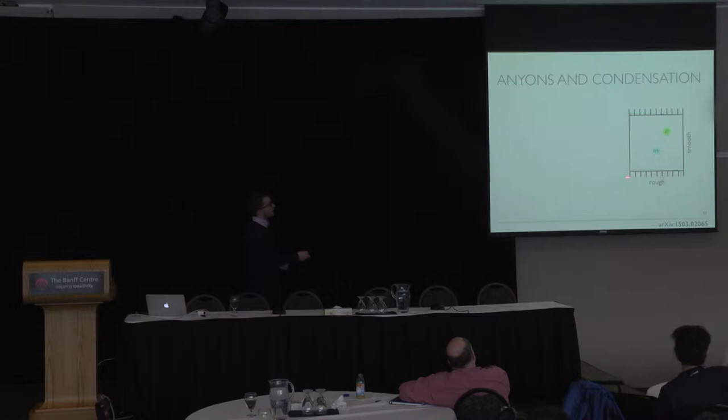if we have a patch of the toric code with two rough and two smooth boundaries, we could have an electric excitation in the bulk and magnetic excitation in the bulk. And we also know that if we have anions which condense on a gap boundary, then they must have mutually trivial statistics.